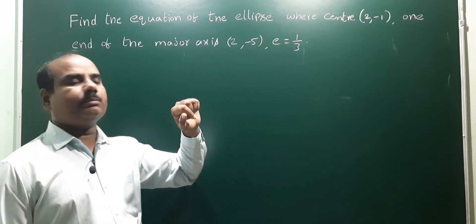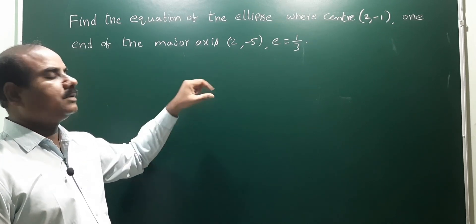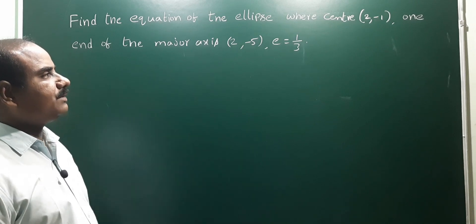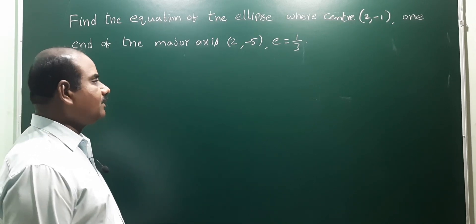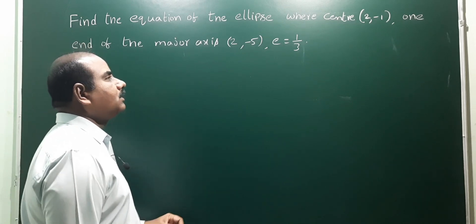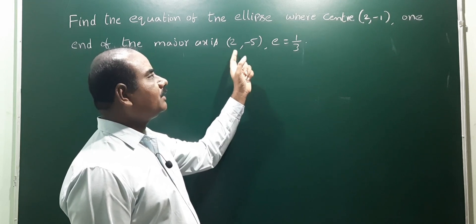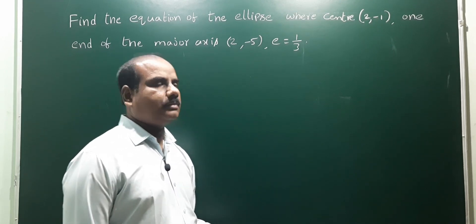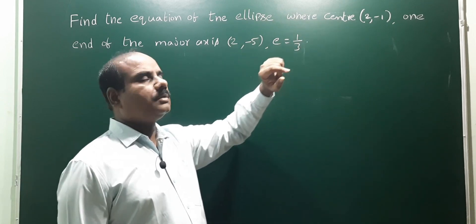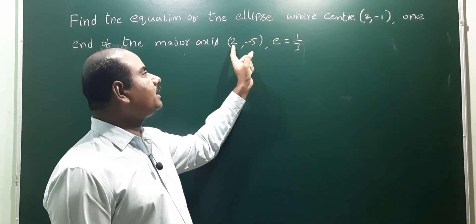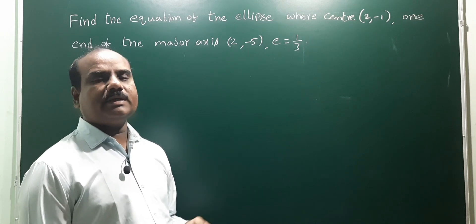Center is (2, -1) and one end of the major axis is (2, -5). In the two-dimensional axis, the x-coordinate is the same for both points. Therefore, the major axis is parallel to the y-axis.